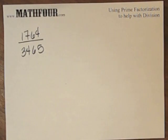This example is a little bit more complex. We have 1764 divided by 3465, and I want to simplify it.